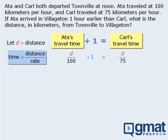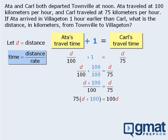At this point we have an equation we can solve for D. First, we will combine the terms on the left-hand side by rewriting 1 as 100 over 100. Now that we have common denominators, we can add the terms. From here, we can cross-multiply, then expand the left-hand side, then subtract 75D from both sides, and then divide both sides by 25 to get D equals 300. So the distance from Townville to Villagetan is 300 km.